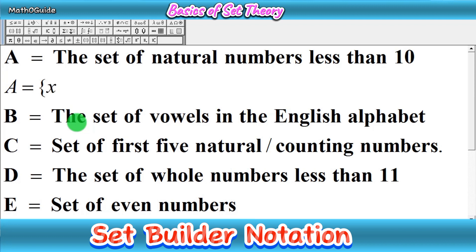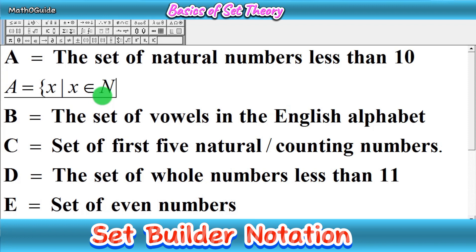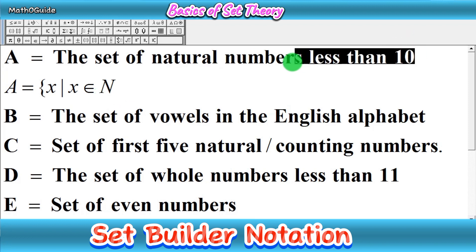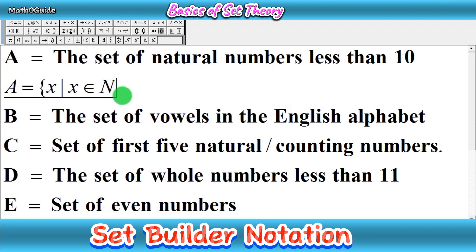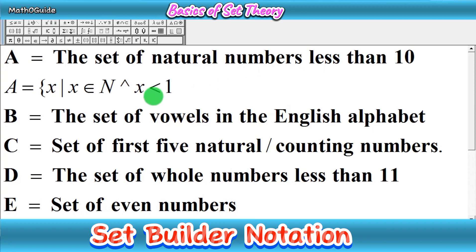Write X, then the symbol of 'such that' — a vertical line — then X belongs to, using the belongs-to symbol. This means the element belongs to the set of natural numbers, which we write as capital N. After that, we have a limit: less than 10. You can write the symbol 'and' or simply a comma — both are used in different books. Then write X strictly less than 10, meaning this set contains natural numbers from 1 to 9, not 10.